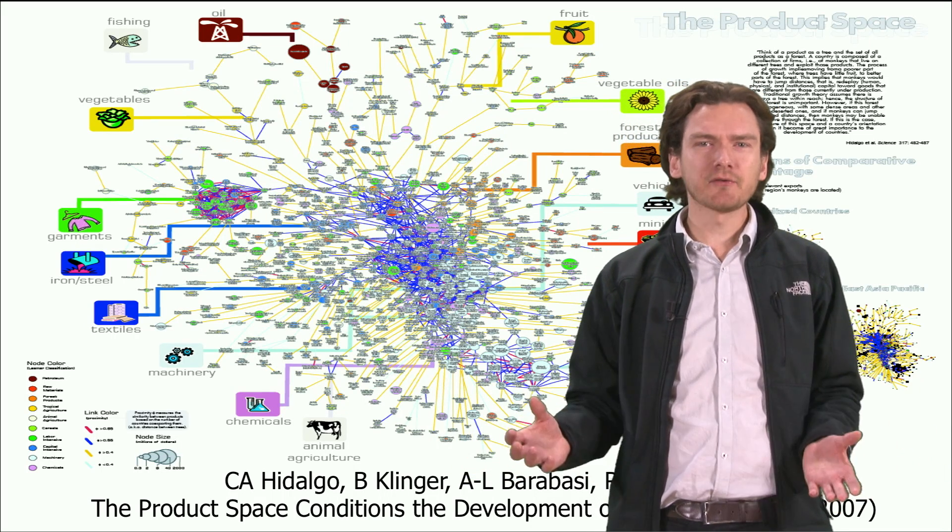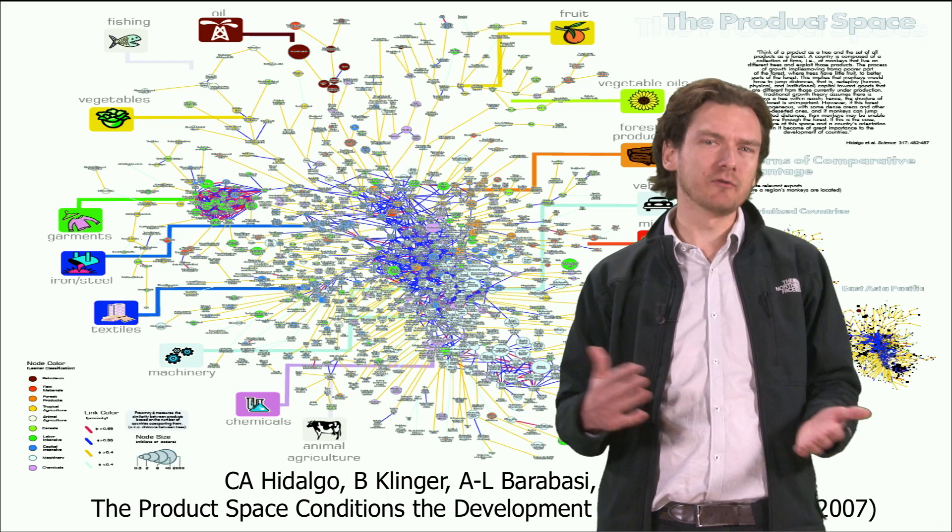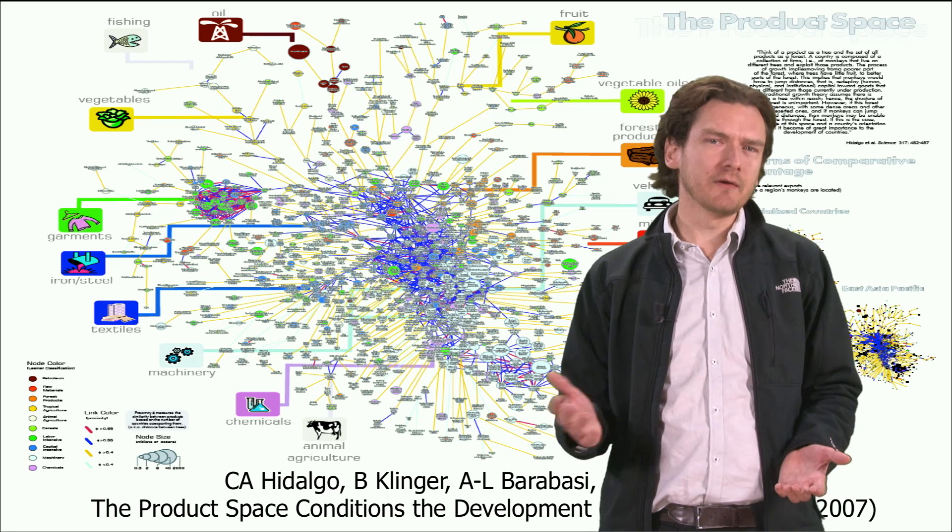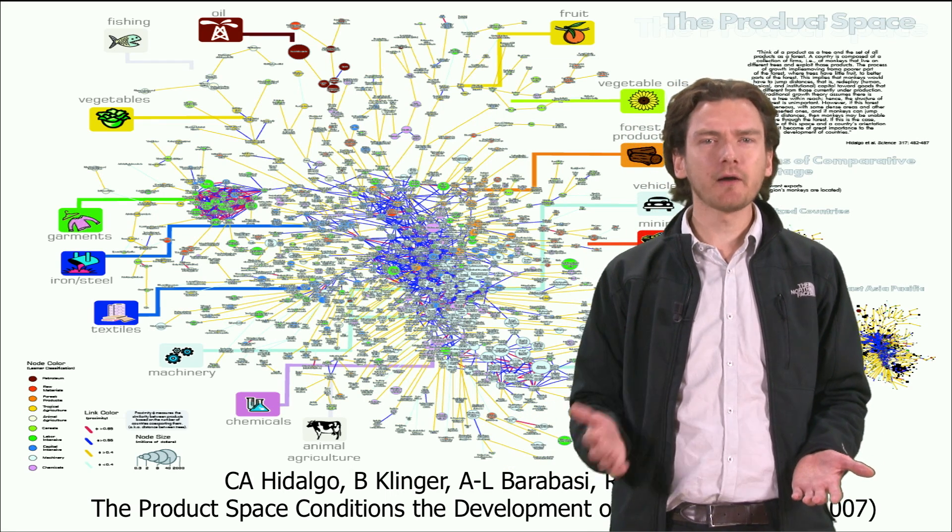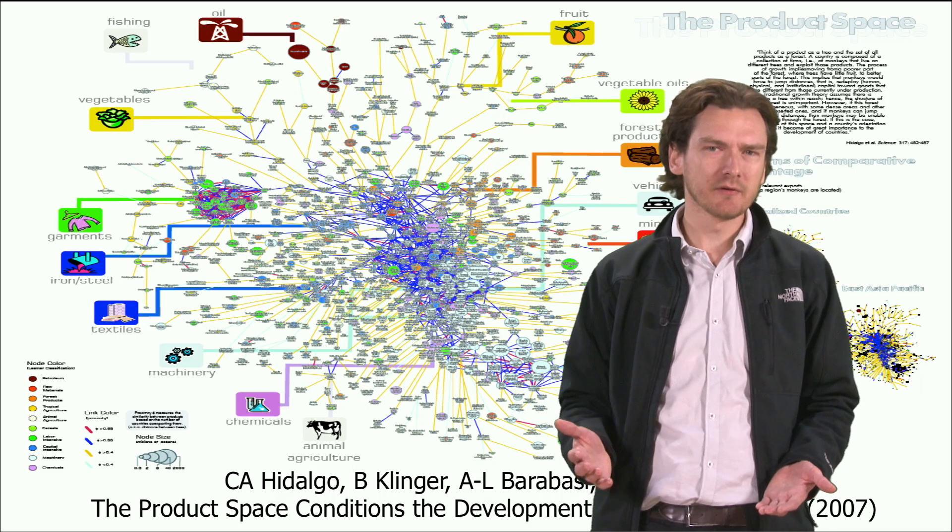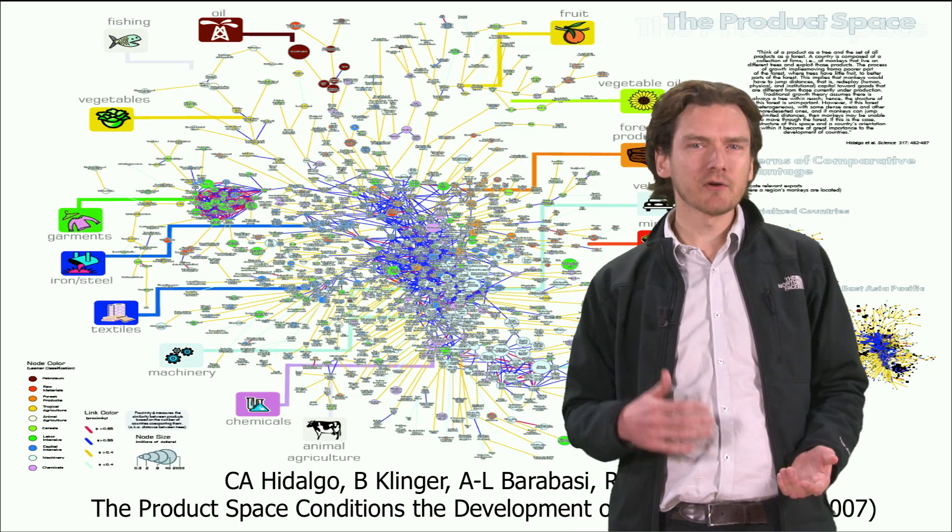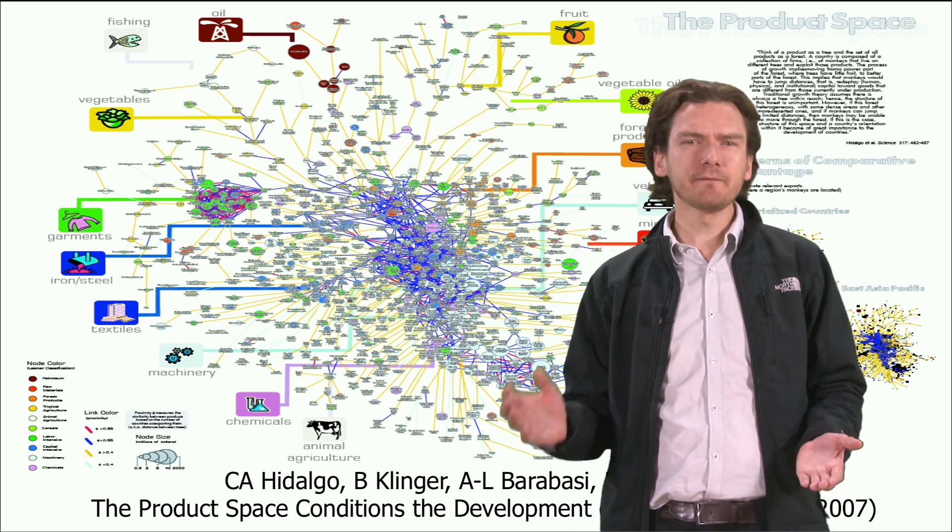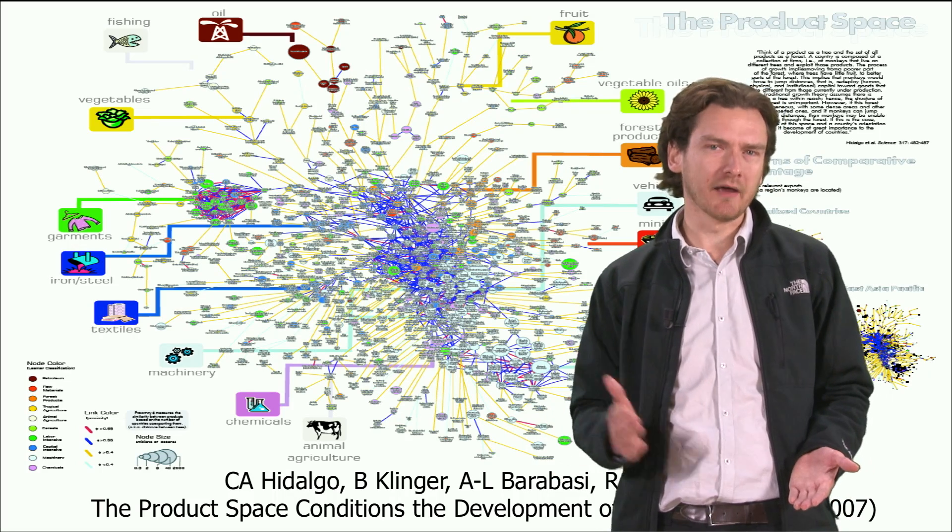And therein they argue that the nature of the connections within this network influences the economic development pathway of that nation. The idea they state is that economies grow by upgrading the products that they produce and export. This comes down to the idea of complementary capital.